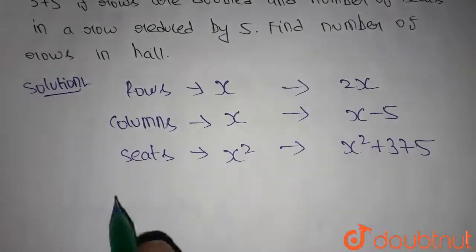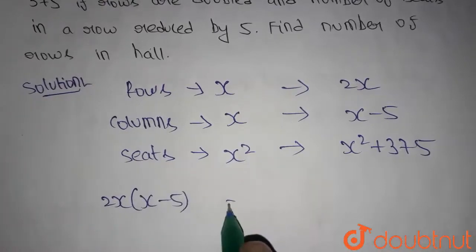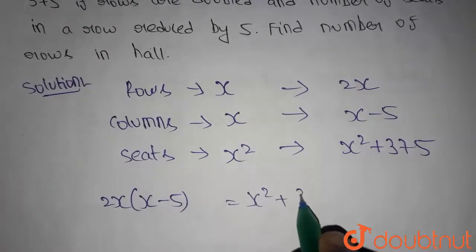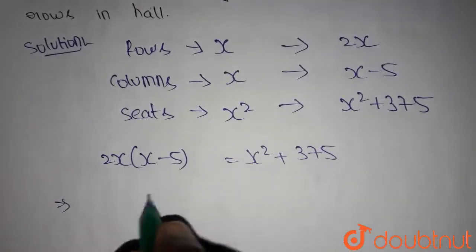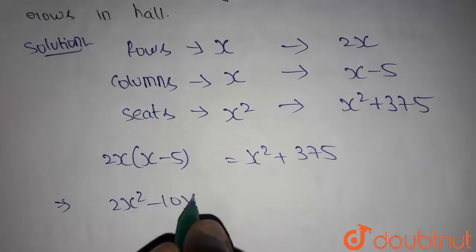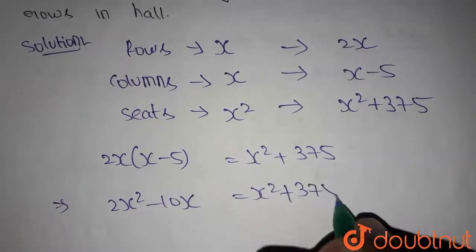We know that rows into columns will become seats. 2x into x minus 5 is equal to x squared plus 375. Now we are going to solve this one to get the value of x. We get 2x squared minus 10x is equals to x squared plus 375.